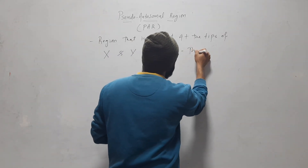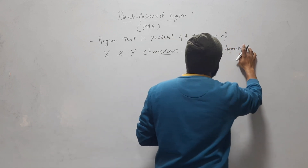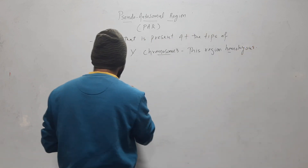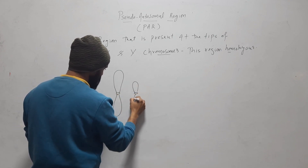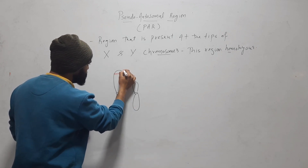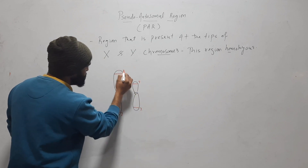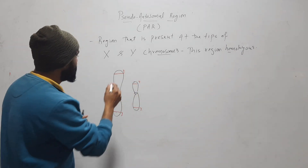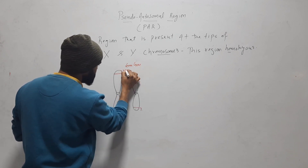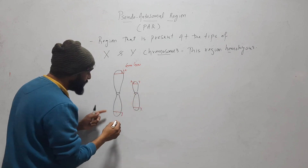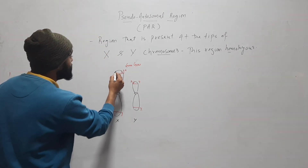This region is homologous. Suppose this is the X chromosome and this is the Y chromosome — at their tips, this region is homologous, meaning this region has the same genes. So if there is a gene here on X, there will also be a gene here on Y.